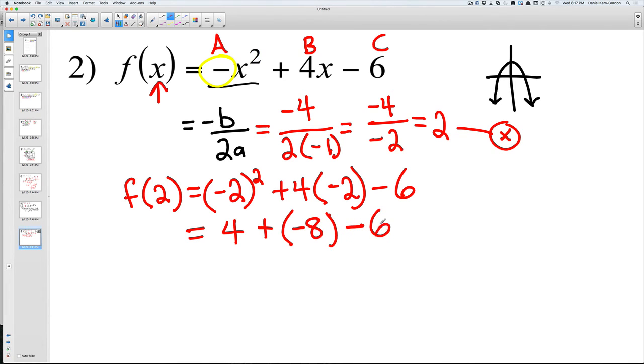So basically, if you want to simplify this, you have four minus eight minus six. Four minus eight is negative four. And then negative four minus six, you're basically adding them together. It's like you owe someone four dollars and you borrow six more dollars. Your final answer is going to be negative ten.